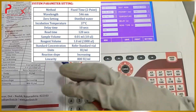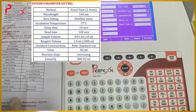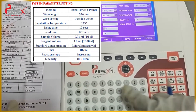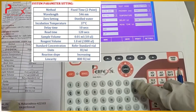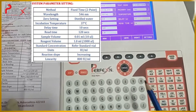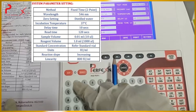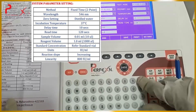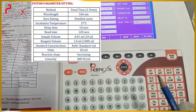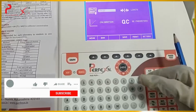For the delay time, they have mentioned 10 seconds — enter 10 seconds by pressing the button. For the read time, they have given 120 seconds — enter that. We have now entered all the parameters according to the literature, so save it and go for return.